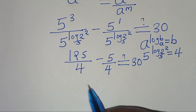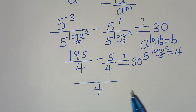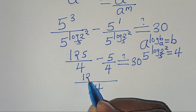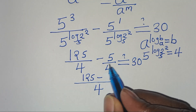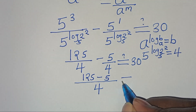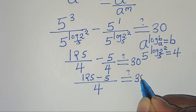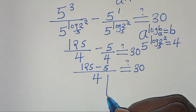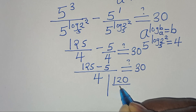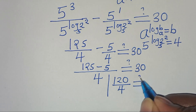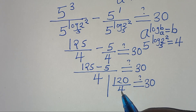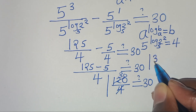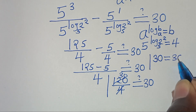Now the LCM is equal to 4, such that we have 4 divided by 4 — this is 1 — times 125, which is 125. Subtract 4 divided by 4 — this is 1 — times 5, which is 5. This is supposed to give us 30. This means 125 minus 5 is equal to 120, which is 120 divided by 4, equal to 30. So 120 divided by 4 is equal to 30, and this shows that the left hand side is equal to 30, as well as the right hand side.